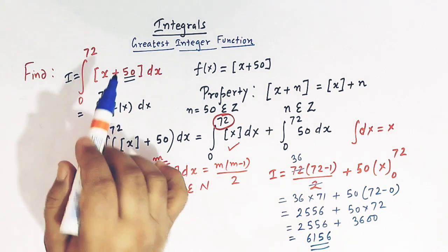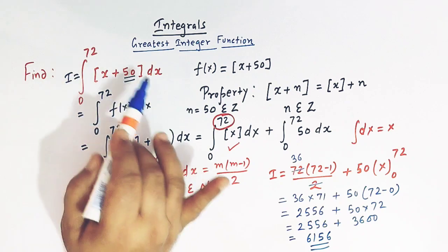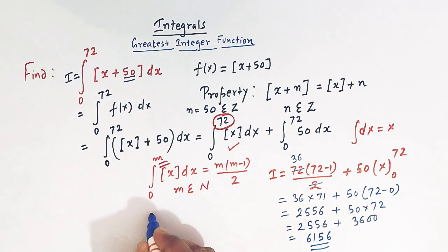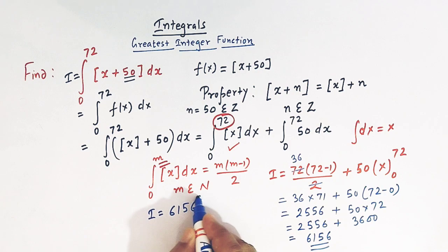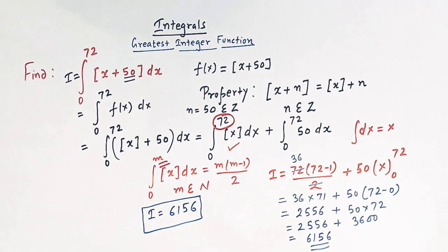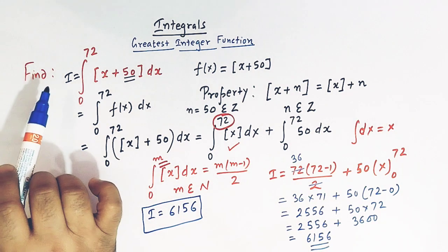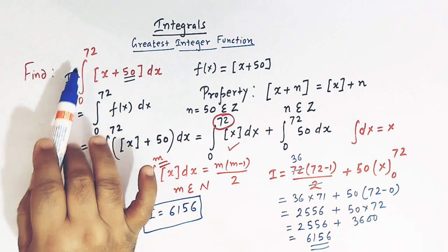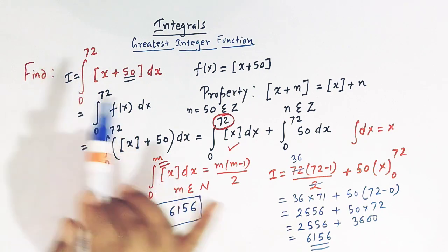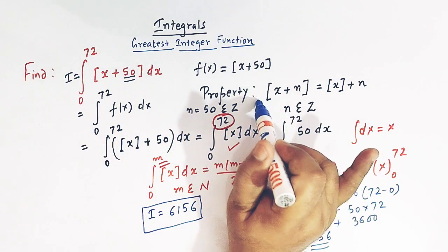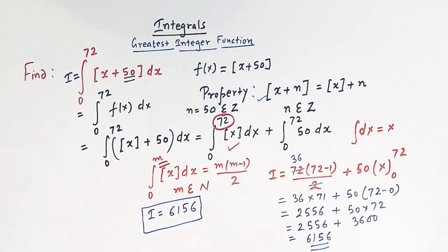We can add these two numbers to get 6156. So the value of this integral I is 6156. This is how we can solve these type of definite integrals using this property of greatest integer function.